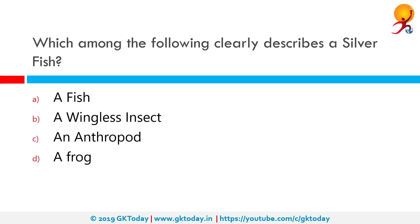Which among the following clearly describes a silverfish? The correct answer is a wingless insect. A silverfish is a small wingless insect in the order Zygentoma. Its common name derives from the animal's silvery light gray color combined with the fish-like appearance of its movements.